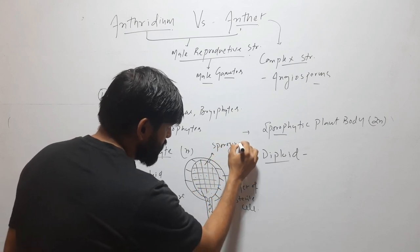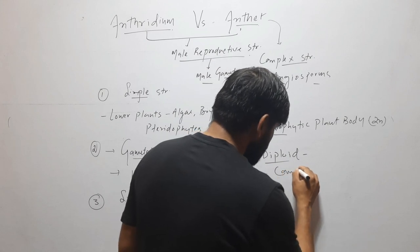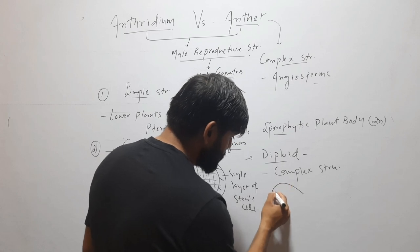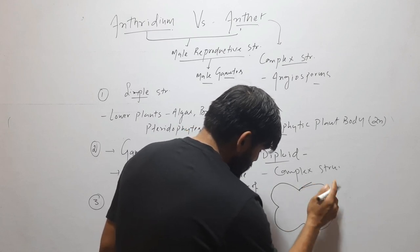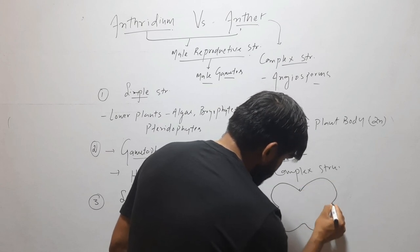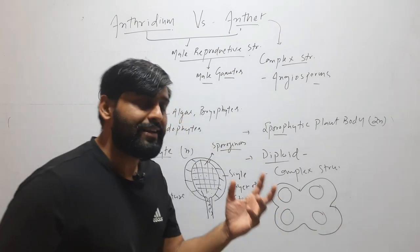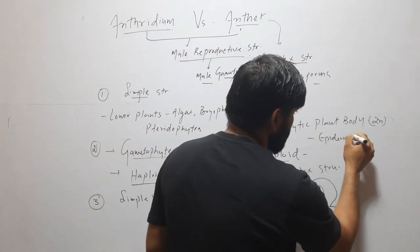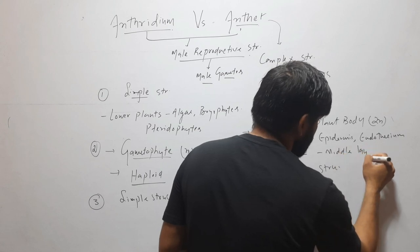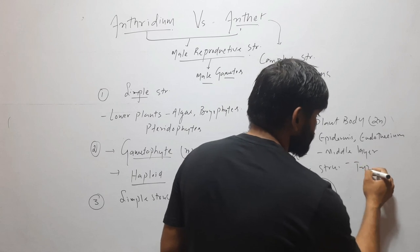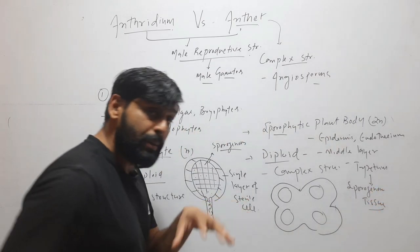The anther, however, is a very complex structure. In it you will find two lobes — it is called bilobed — and each lobe has two thecae. Its outer layer is the epidermis, then the endothecium, then the middle layer, then the tapetum, and inside the tapetum is the sporogenous tissue. So you can see it is a very complex structure.